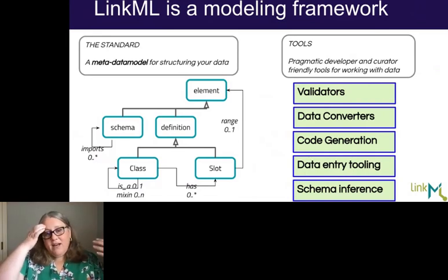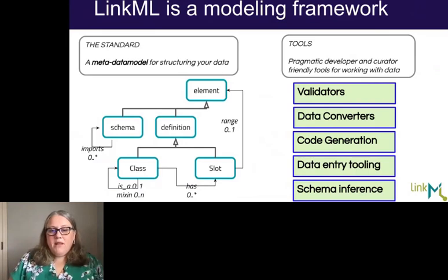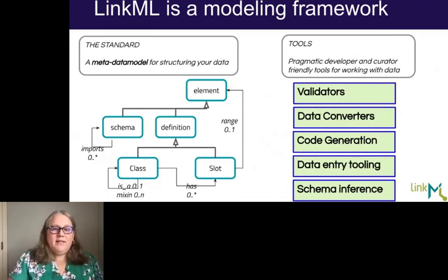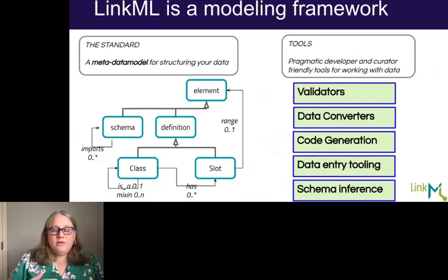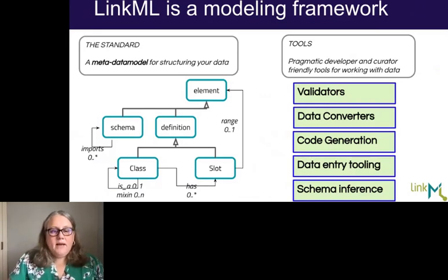For example, you can convert a TSV to a more structured JSON file that's easier to parse downstream. You can also generate Python and Pydantic data classes from YAML and infer the schema from instance data. If I have a big spreadsheet of lake samples, I can run it through a tool called the Schema Automator in LinkML and extract what we think would be the data model for that data — really trying to make that implicit data model explicit. We also have validators that parasitize existing frameworks, such as JSON Schema validators.